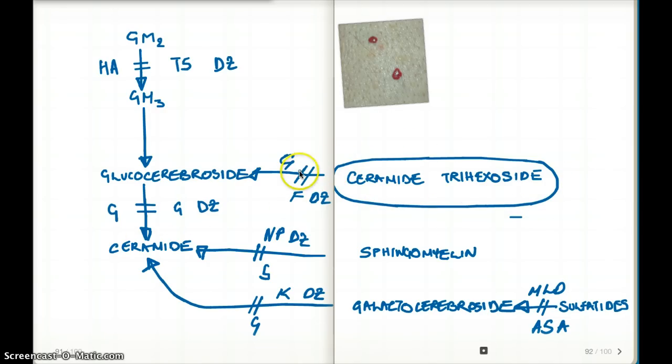The enzyme that is deficient in this pathway is galactosidase. The disease is Fabry's disease.